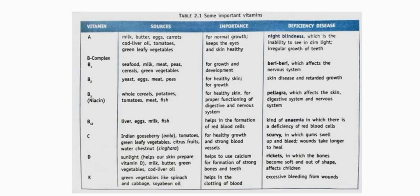Next is Vitamin C. The sources are Indian gooseberry (amla), tomatoes, green leafy vegetables, all citrus fruits, and water chestnut (singhara). The importance is for healthy growth and strong blood vessels. The deficiency disease is scurvy, in which gums swell up and bleed, and wounds take longer to heal.